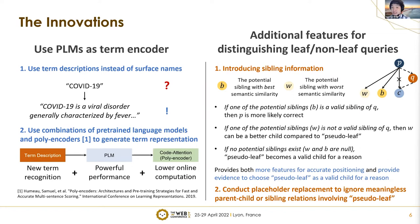Here are the innovations of our paper. The first is we use pre-trained language models as term encoder. To do this, we use term descriptions instead of surface names. For example, instead of using the new term COVID-19 directly, we extract the meaning of COVID-19 from the MeSH database, which contains common concepts like viral disorder or fever, allowing the method to recognize new terms. We use the combination of pre-trained language models and poly encoders to generate term representations. Using term descriptions allows the model to recognize new terms, the pre-trained language model enables powerful performance, and the cross-attention from the poly encoder ensures lower online computation.